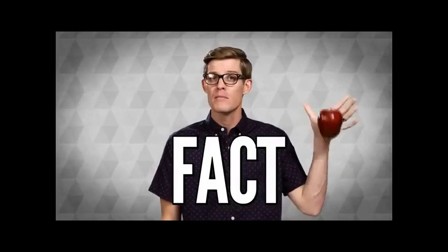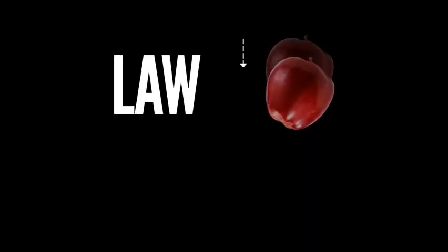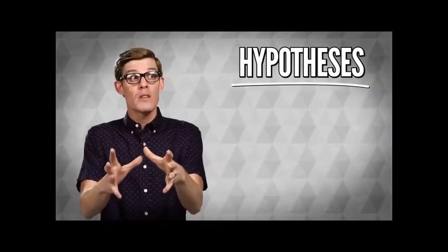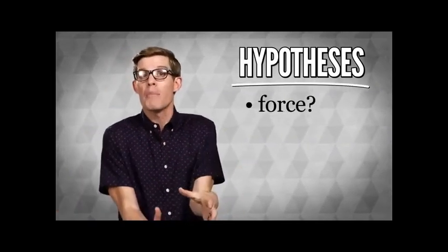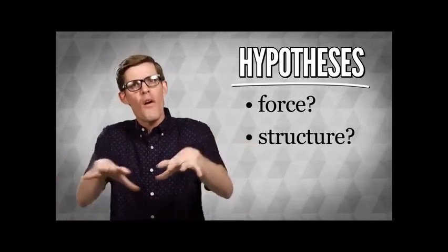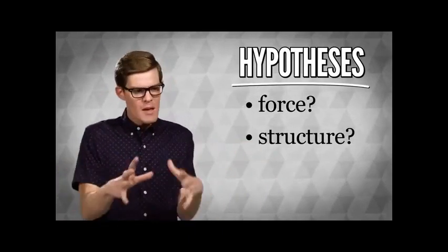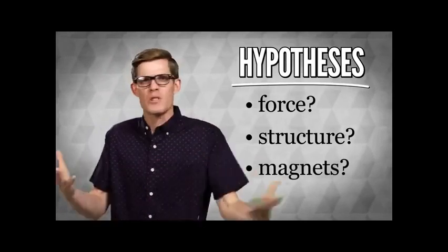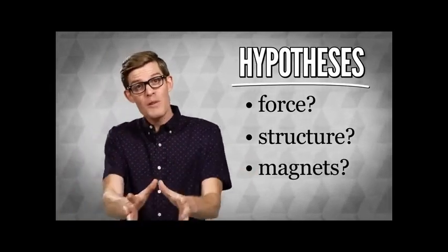Fact: if I drop this, it'll fall. Law: I can mathematically describe how fast that apple and the earth will accelerate toward one another based on their masses and distance. But why is it happening? Hypothesis: there's a force pulling on the apple, or maybe there's something about the structure of the universe that makes massive things fall toward one another, or maybe the apple is magnetically attracted to earth. Eliminate the bad ones and we're left with a theory.